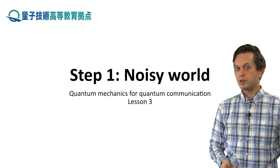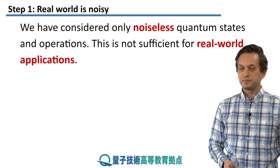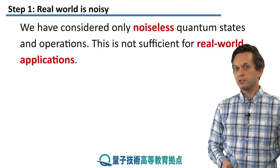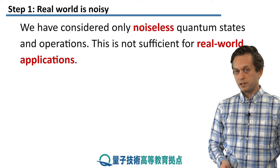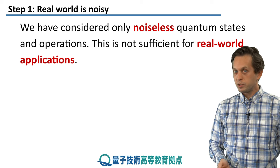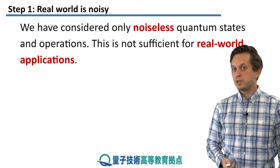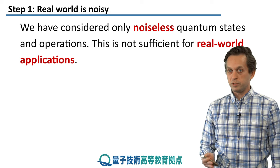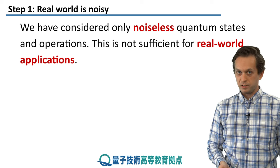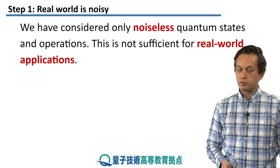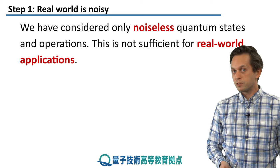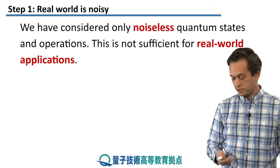In step 1, we will talk about the noisy world. Up until now, we have only talked about quantum states which were noiseless. That means they were always in the exact state that we wanted them to be. It means we had full knowledge of the state — there was no uncertainty in our knowledge of the description of the state. But of course, the real world is a noisy place, so this description is not quite sufficient for real-world applications.